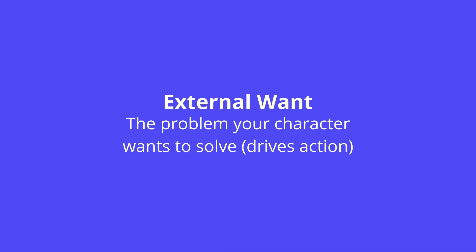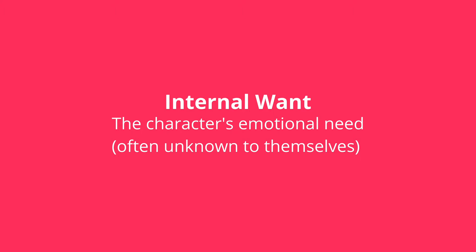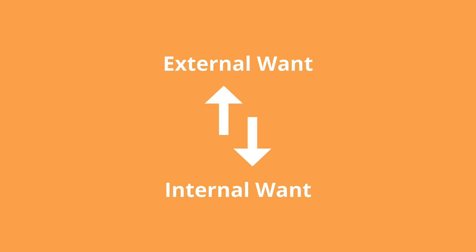As I said in the last video, there are two layers of action in a novel or short story. The external want — which you can also think of as the problem the protagonist needs to solve — and the internal want, which is the emotional need that the protagonist needs to satisfy. And those two things should be related.